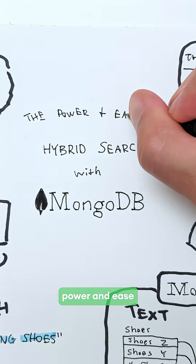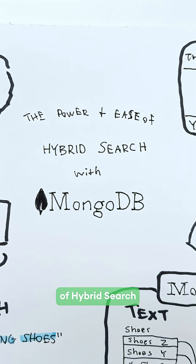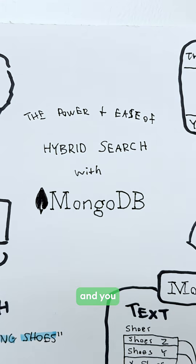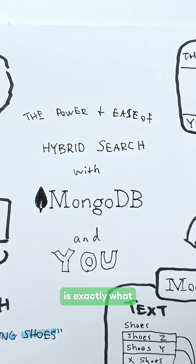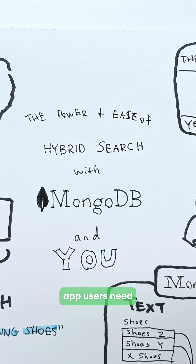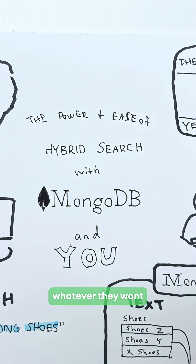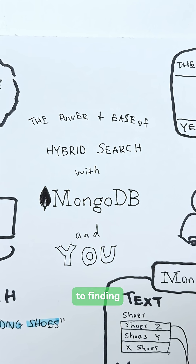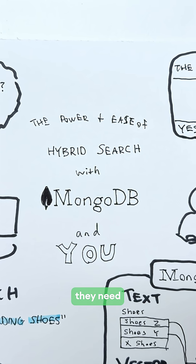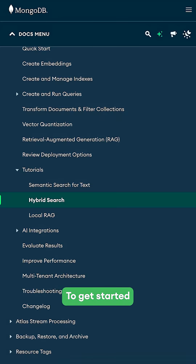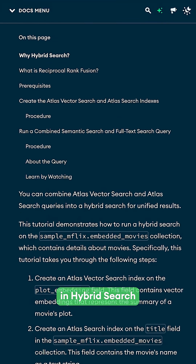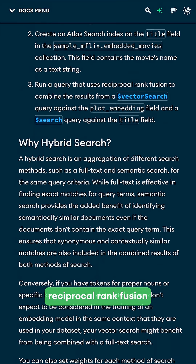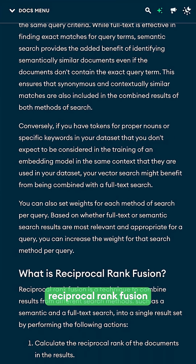The power and ease of hybrid search with MongoDB is exactly what app users need to go from searching whatever they want to finding exactly what they need. To get started, check out MongoDB's docs on hybrid search with reciprocal rank fusion today.